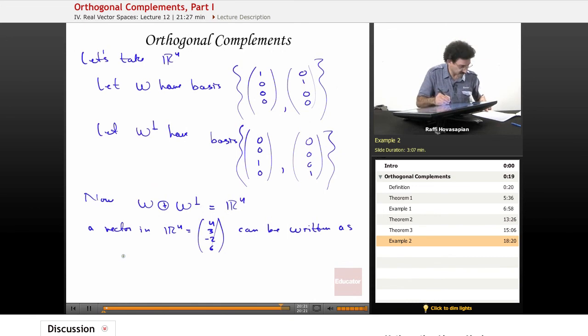We can write it as (4, 3, 0, 0). This vector right here is in the space W. And we can add it to the vector (0, 0, -2, 6), which is a vector in W perp.